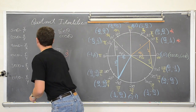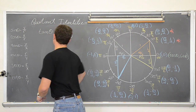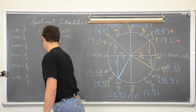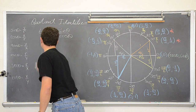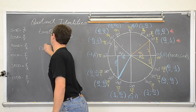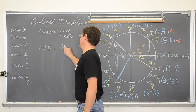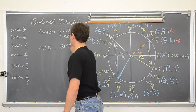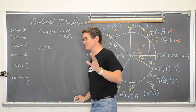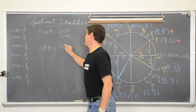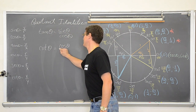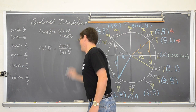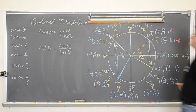The last quotient identity is cotangent of theta equals cosine theta over sine theta. I am Mr. Tarrou and I am out. Go do your homework.